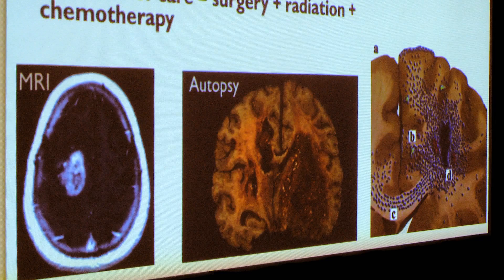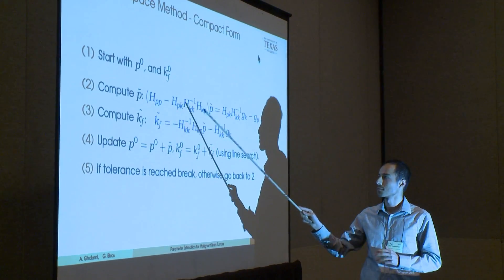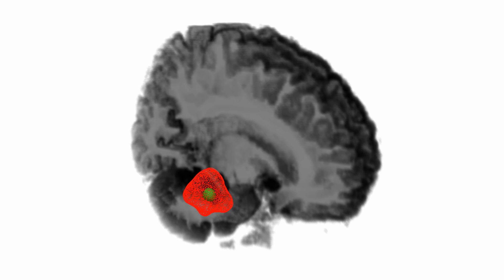Brain tumors specifically are very lethal. 80% of them are malignant and the median survival rate has remained constant in the past 30 years. It's about 14 months, and it's important for us to try as mathematicians to give as much information as possible to doctors so that they can treat patients with the best treatment plan.